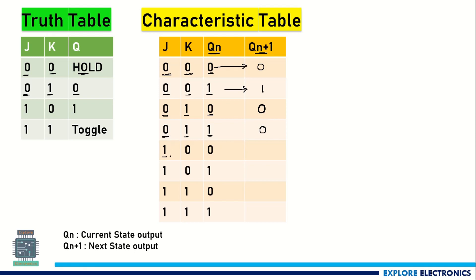When J=1, K=0 is the input and the current state of the output is 0, it gives 1. Because for J=1, K=0 we get 1 as the result. So when J is equal to 1 and K is equal to 0, whatever the previous output is, we will be getting 1 as the result.